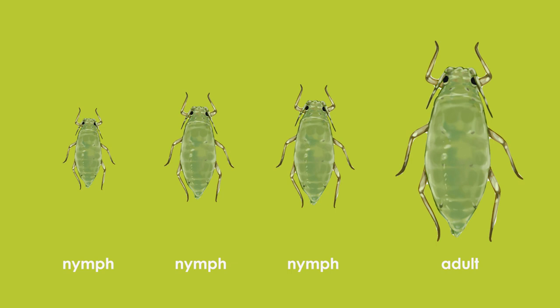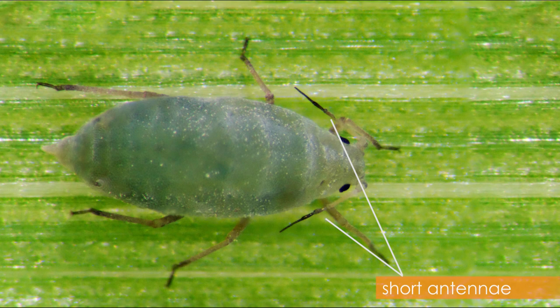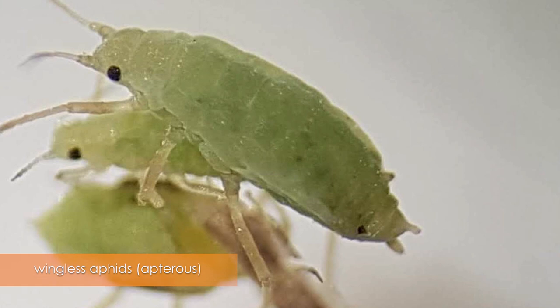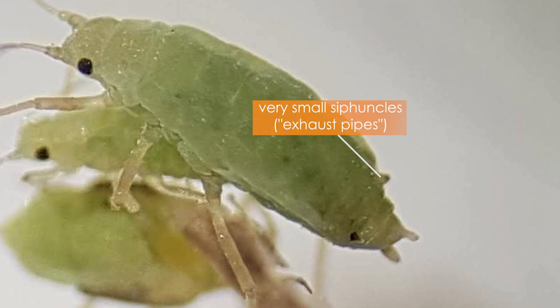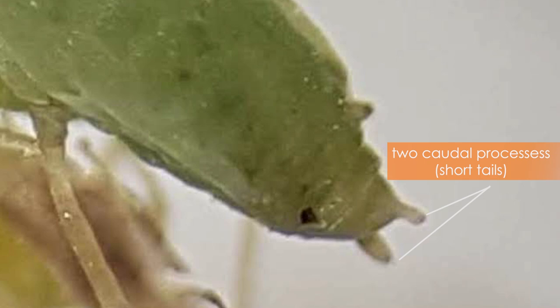The wingless Russian wheat aphid has very distinct short antennae, about half the length of their body. Russian wheat aphids also have very small syphuncles, also known as exhaust pipes. They can appear absent to the naked eye, and they have two caudal processes on the end of the abdomen, which give the appearance of a double tail.